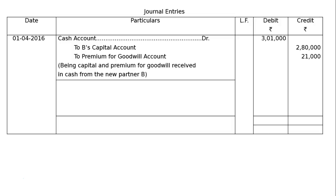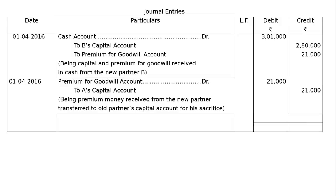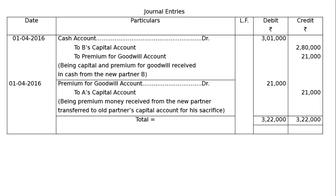The next entry: 1st April 2016 — Premium for goodwill account debited Rs. 21,000. To A's capital account Rs. 21,000. Being premium money received from the new partner, transferred to the old partner's capital account for his sacrifice. The debit and credit sides will be totaled, amounting to Rs. 3,22,000 on both sides.